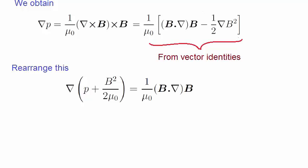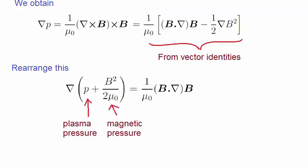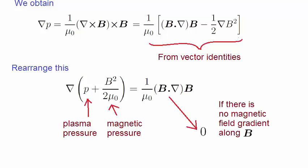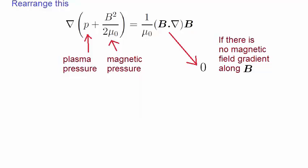What you'll notice is P, the plasma pressure term — that is, the pressure applied by the particles in the plasma — and this term is also a pressure term. It's the pressure applied by the magnetic field on the plasma. If we assume we have a situation where the magnetic field B does not change in its own direction, so that its gradient is zero, then we can set the right-hand term to zero. What this says is that for the left-hand side to equal zero, the expression in brackets must be a constant.